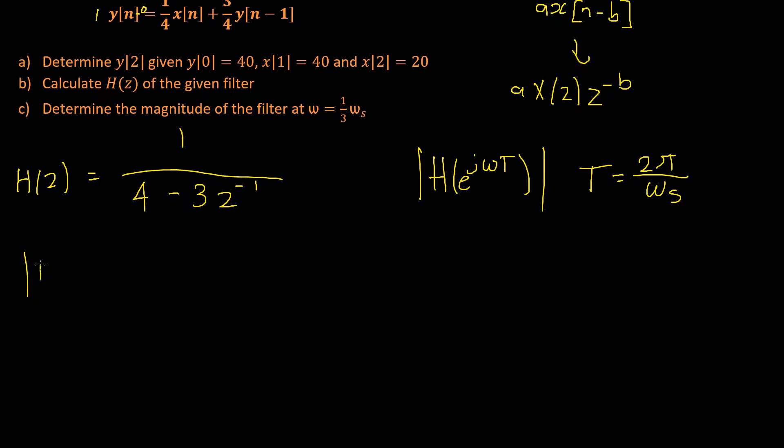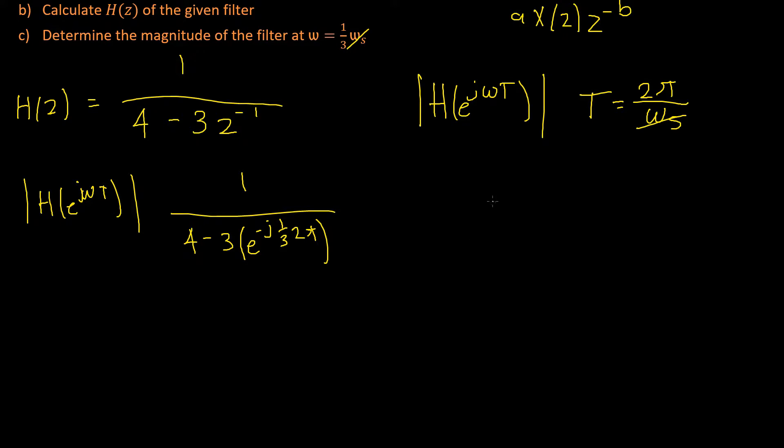Our h of e to the j omega t will become 1 divided by 4 minus 3, and then that's multiplied by e to the negative j omega, but where our omega is 1 third omega s, 1 third, and our t is 2 pi on omega s, so our omega s and our omega s will cancel, leaving us by 2 pi. Okay, so then we can use the substitution e to the negative j omega is equal to cosine of negative omega plus j sine of negative omega.